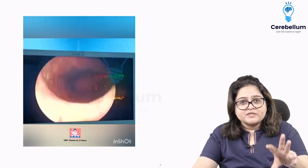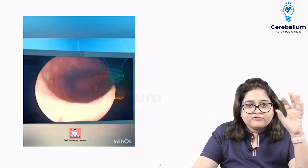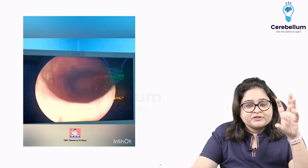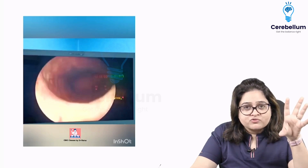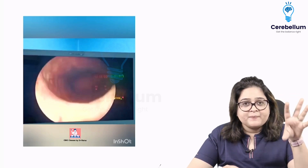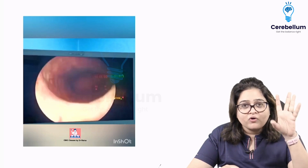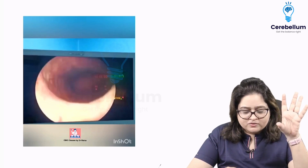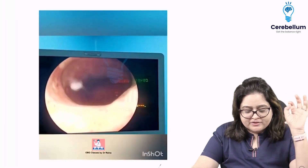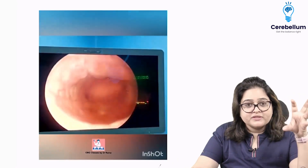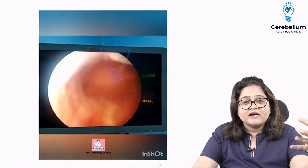Now I'm going to show you some video clips of different diagnostic and operative hysteroscopies. This one is just a simple hysteroscopy of a normal looking uterus. You can see I'm entering — there's fluid inside which is distending the cavity. This is a normal cavity.